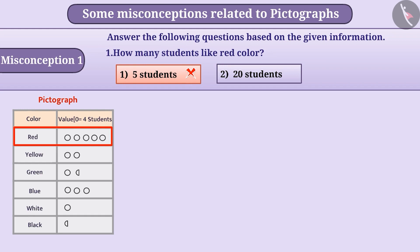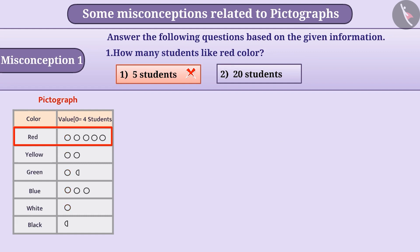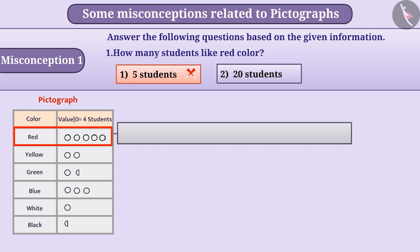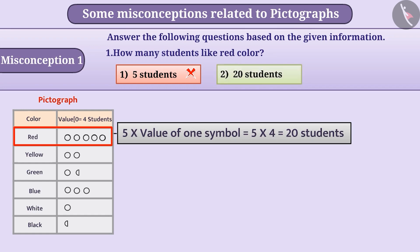In this pictograph, the value of the symbol O is equal to four students — that is, whenever we see an O, we consider it as four students. In the row of red colour, the symbol O appears five times. So the number of students is 5 multiplied by 4, which equals 20. Hence, red colour is the favourite of 20 students, making option 2 the correct answer.